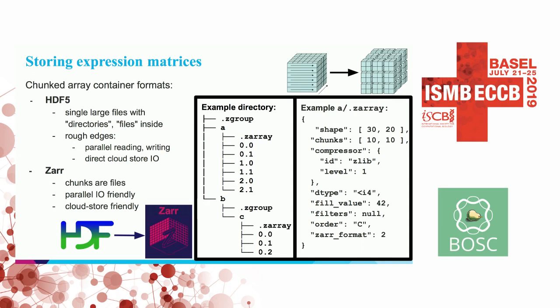HDF5 is also hard to use directly in public clouds, just as an artifact of how it's implemented. Zarr is a lot simpler and solves some of those problems. It basically materializes the chunks of these multi-dimensional arrays as individual files on some underlying file system-like abstraction, which can be your local disk, a cloud store, or even a database storing binary blobs. It comes with simple metadata about the shapes of the arrays, and the chunks themselves are gzip or other compression codecs applied to the literal subset of the higher-dimensional array.